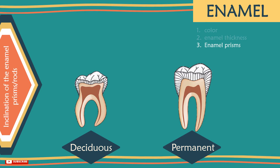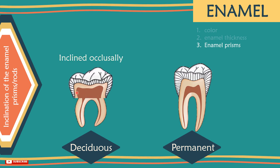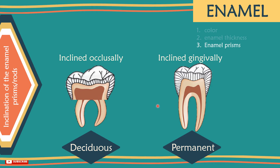The direction of enamel prisms or enamel rods: in the cervical third of primary molars, the enamel prisms are inclined in an occlusal direction, so there is no need to bevel the gingival floor of a proximal box, as in permanent teeth, in which the cervical enamel prisms are inclined gingivally or apically.